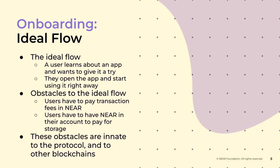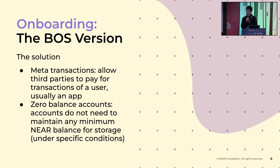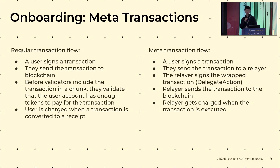So what are the obstacles to the ideal flow? We think there are two fundamental obstacles. One is that users have to pay for transaction fees in Near, and also users have to have Near in their account to pay for storage. Those two constraints are fundamental to the protocol. Our solutions are twofold: first, we're implementing a feature called metatransactions — a protocol feature that allows third parties to pay for a user's transactions. Second, there is a protocol feature called zero-balance account, which means that under specific conditions, accounts do not need to maintain any minimum balance for storage.